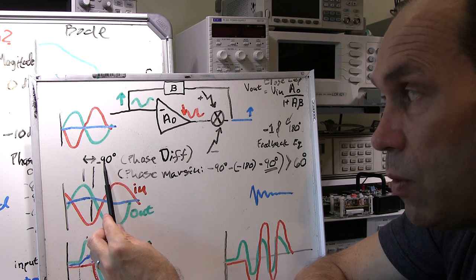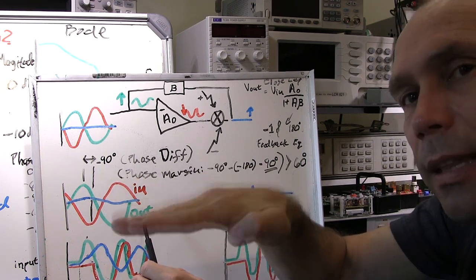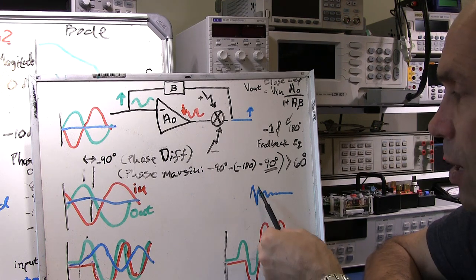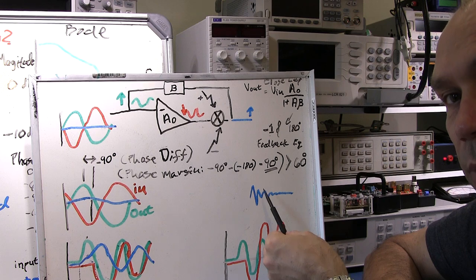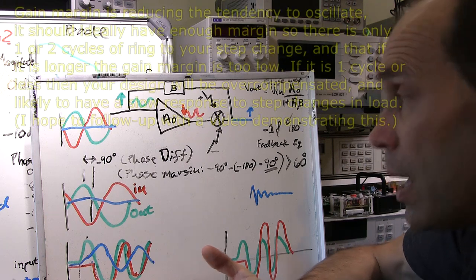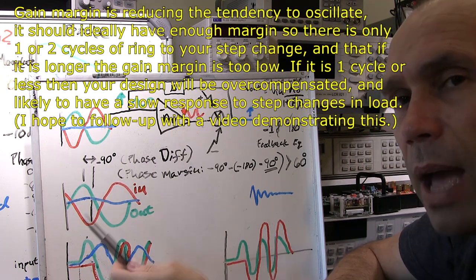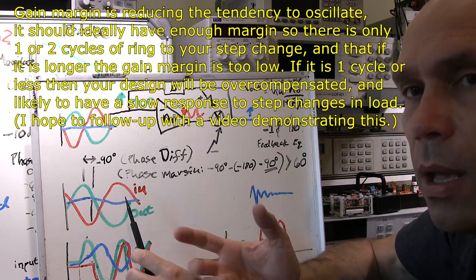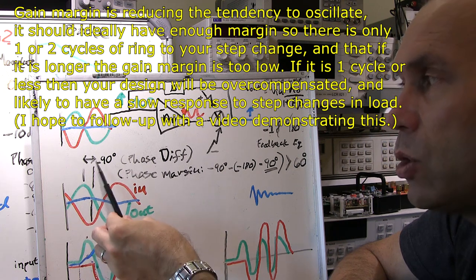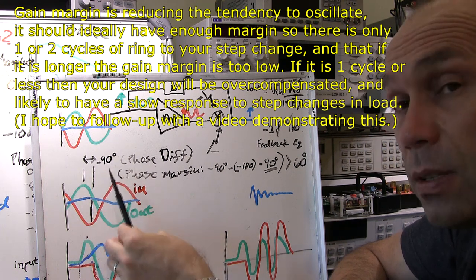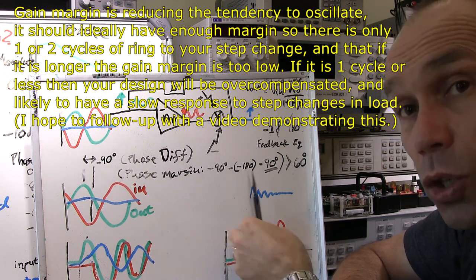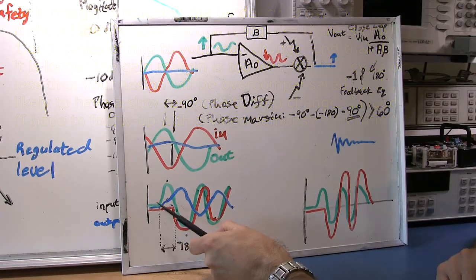As long as things aren't going too far out, the output will eventually settle to the right level. You might recognize this behavior — a little disturbance on the output, and then it slowly comes around and starts settling into the right level. That's known as ringing. The actual behavior can be very complex, but as long as your phase difference isn't too far out, you might have some instability for a while and then it should settle into a regulated level.